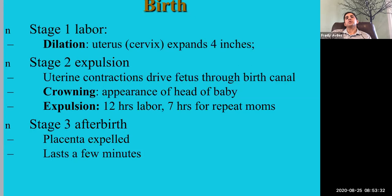Then expulsion happens — the baby finally comes out. For first-time mothers, labor lasts about 12 hours on average. If you've given birth before, the average is about 7 hours. The whole process can take 12 hours for first-time mothers, though it varies widely — for some it could be 24 to 48 hours, and for others as little as an hour.